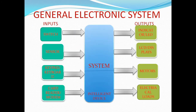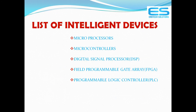One programmable device is mandatory for any electronic system. As an engineer, you need to work with these intelligent devices and communicate with them using a specific language. From an electronics background, there are five intelligent devices: processors, controllers, digital signal processors (DSP), field programmable gate arrays (FPGA), and programmable logic controllers (PLC).